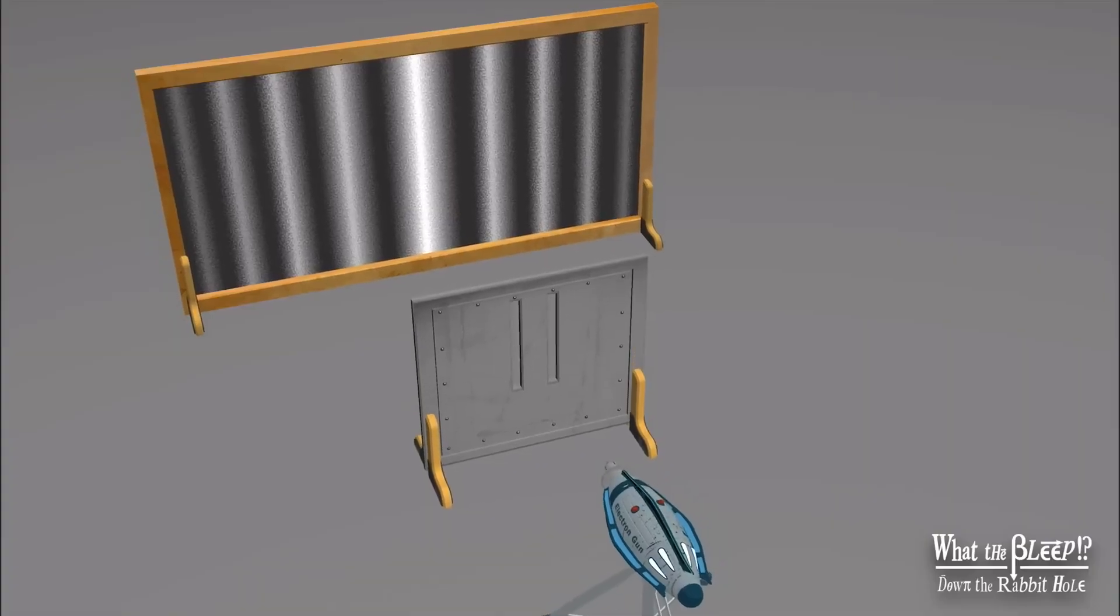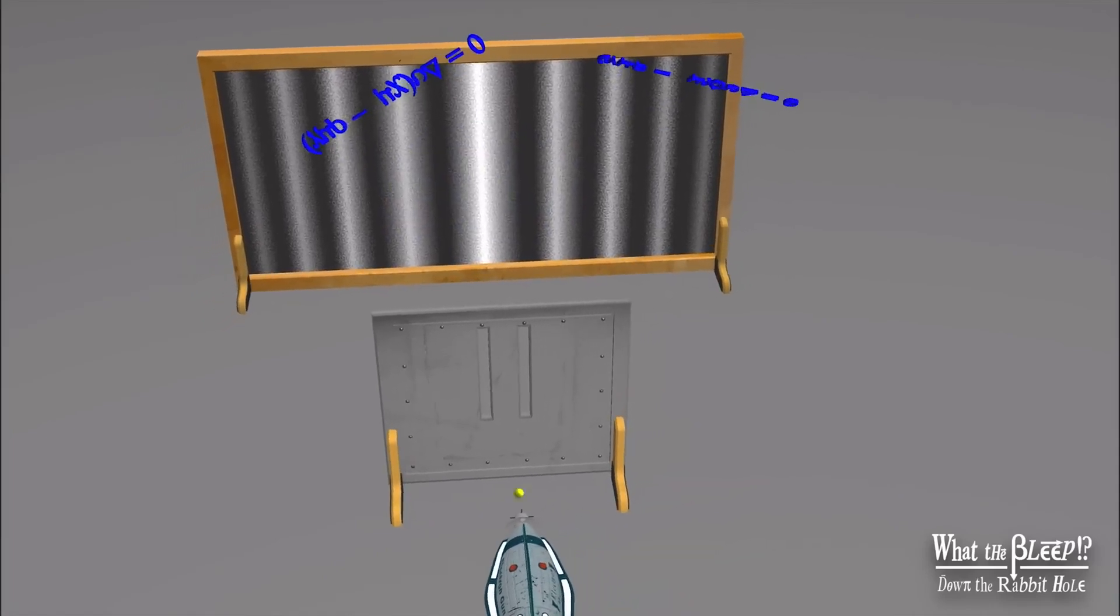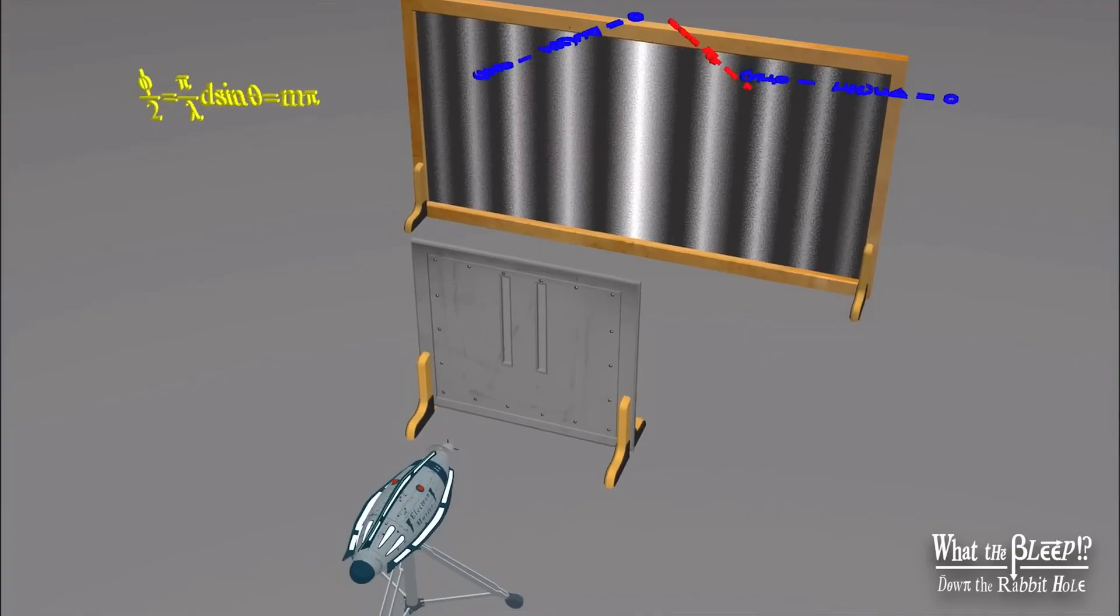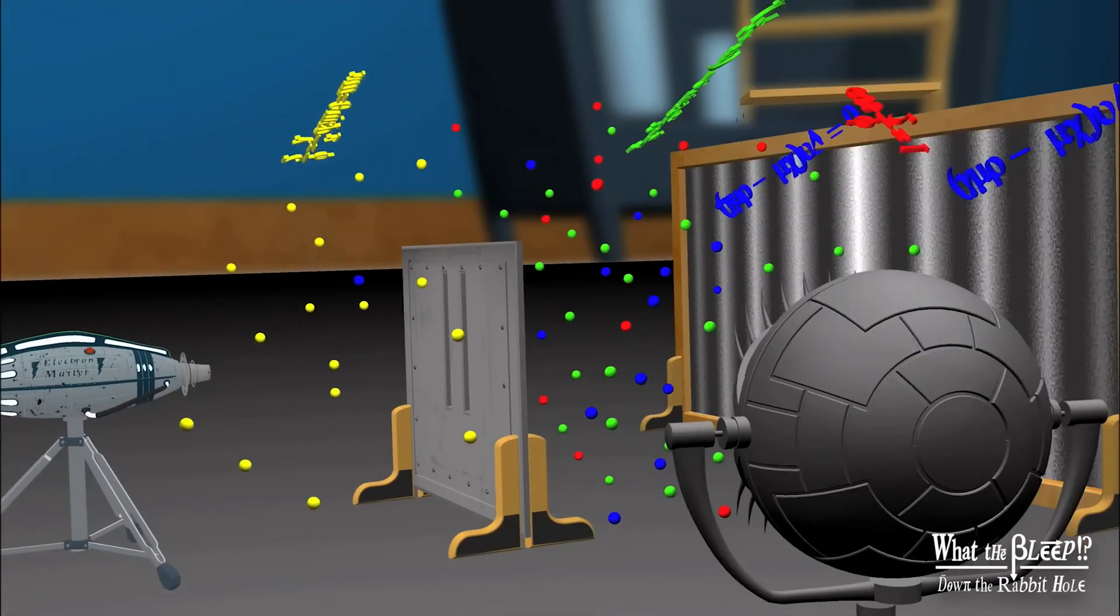But mathematically, it's even stranger. It goes through both slits and it goes through neither, and it goes through just one and it goes through just the other. All of these possibilities are in superposition with each other.